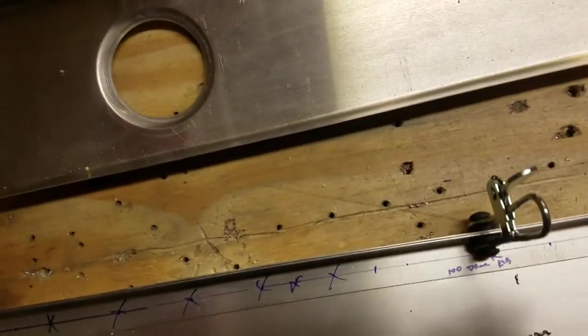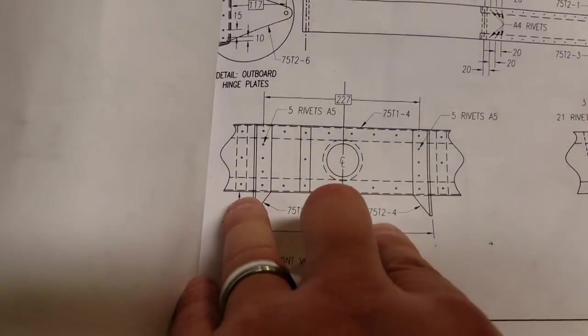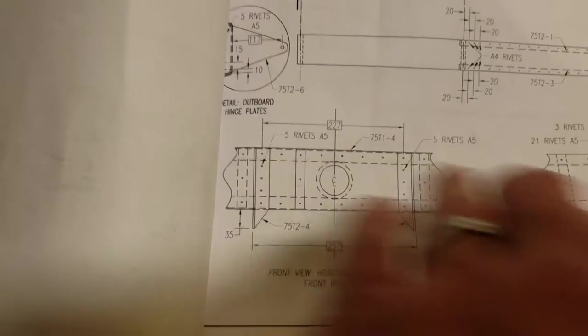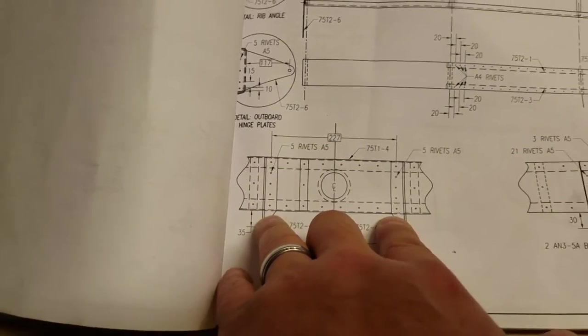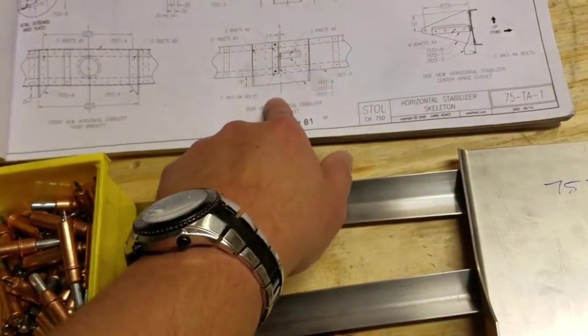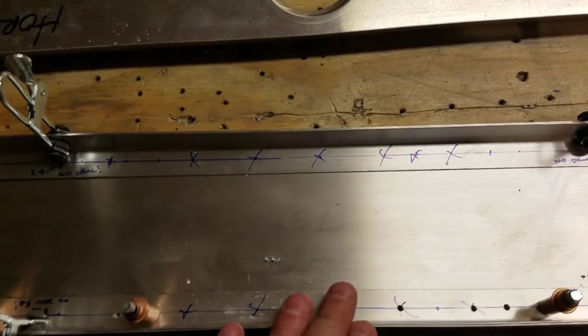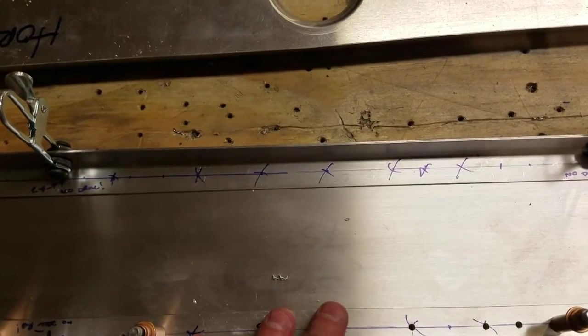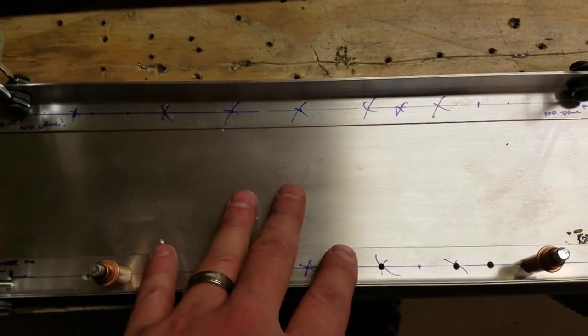When I drill the front spar, I'll need to make sure that my 40 pitch rivets that go all across the doublers don't actually interfere with these brackets and the rib stations. I forgot to take that bracket into account when I started drilling the rear spar. It shouldn't be a problem to compensate for it one millimeter one way or the other.